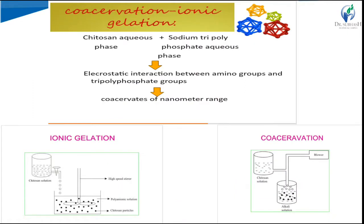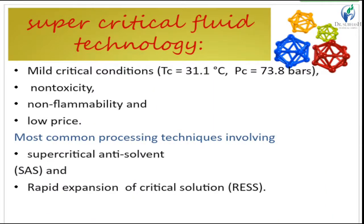Ionic gelation is also widely used for the preparation of nanoparticles, especially using the natural polymer chitosan. Chitosan is dissolved in acidic acid solution, and sodium TPP (tripolyphosphate) is used as the ionic cross-linker in the aqueous phase with stabilizers. Chitosan solution is added drop by drop into the aqueous phase containing stabilizers with continuous high-speed stirring to obtain nanoparticles.